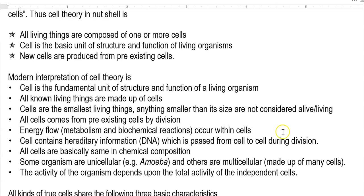Energy flow is common for all cells, which includes metabolism — that is, anabolism, catabolism, and various biochemical reactions always occurring within the cells. Cells contain hereditary information in the form of DNA, which is passed from one cell to another during the cell division process — that is, meiosis. All cells are basically the same in chemical composition; when you analyze the chemical composition of cells, they will have the same composition.